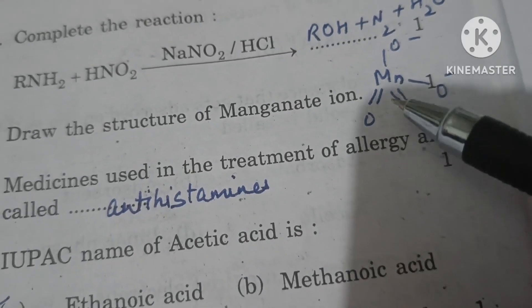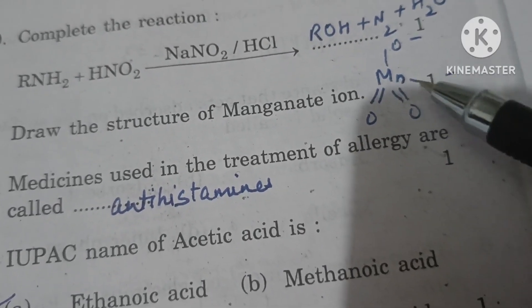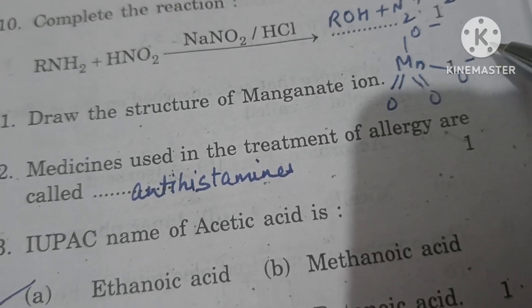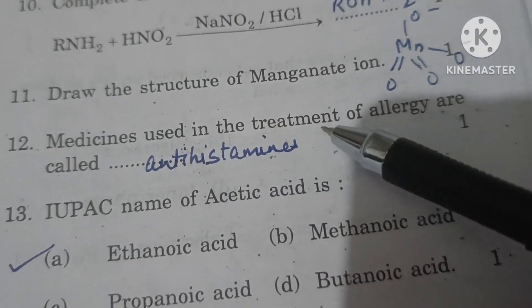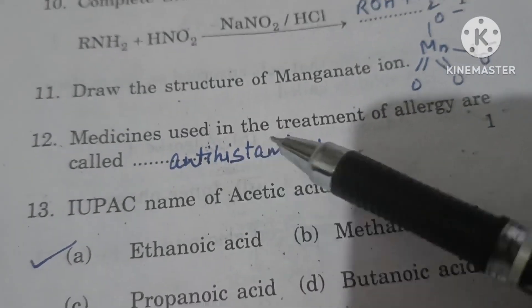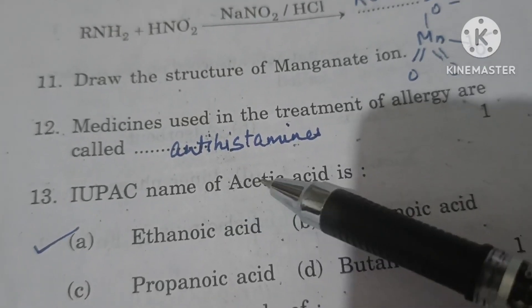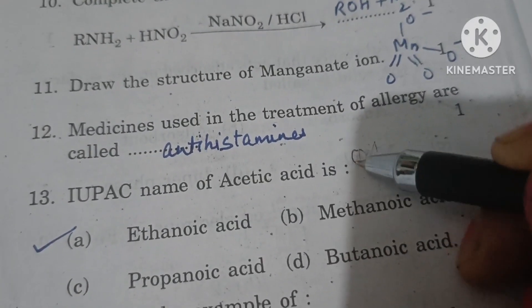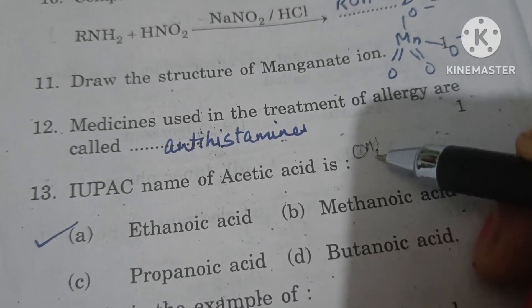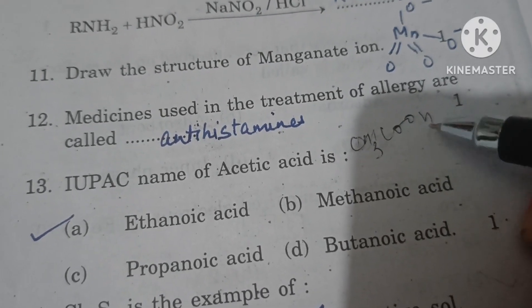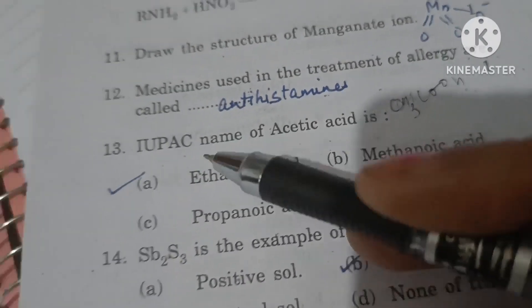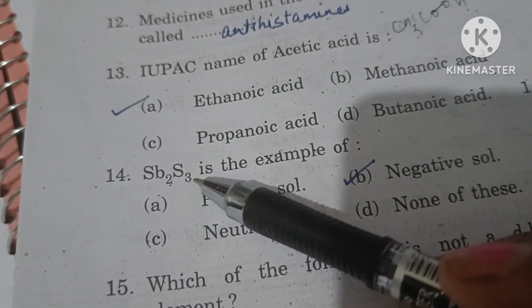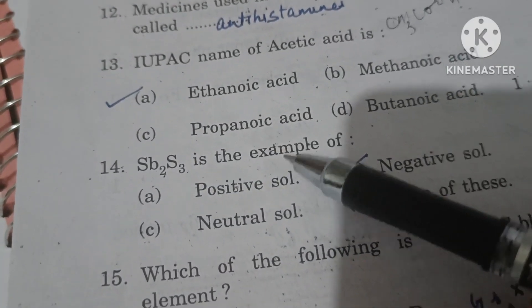Structure of manganate ion: manganate is MnO₄²⁻, so it is tetrahedral — two doubly bonded oxygens and two singly bonded oxygens each with a negative charge. Medicine used in treatment of allergy: antihistamines.